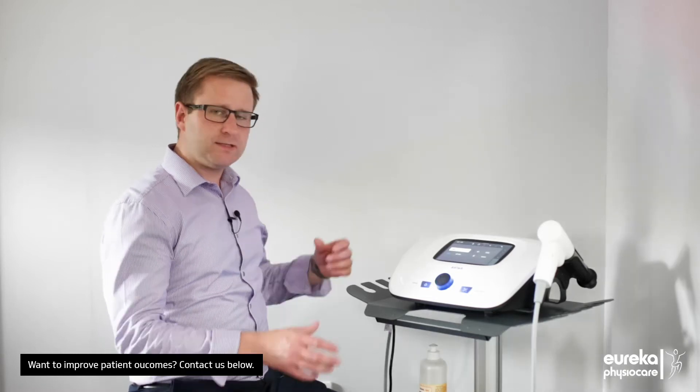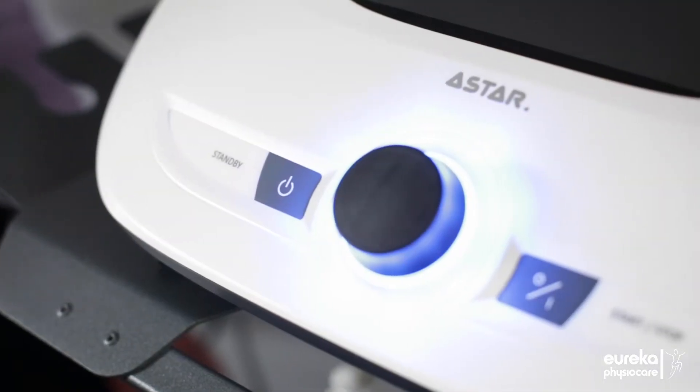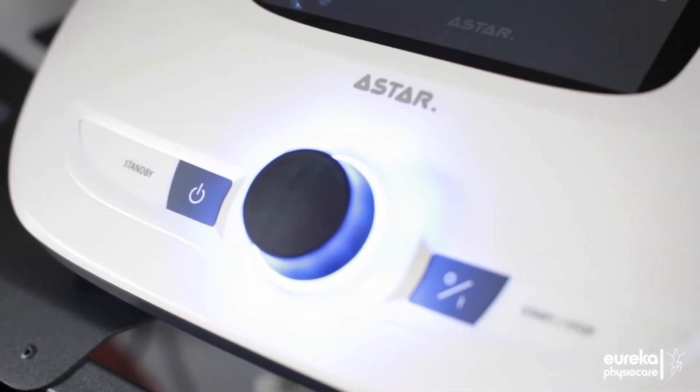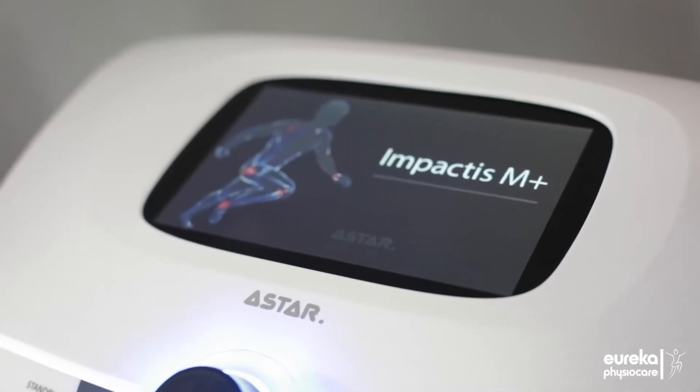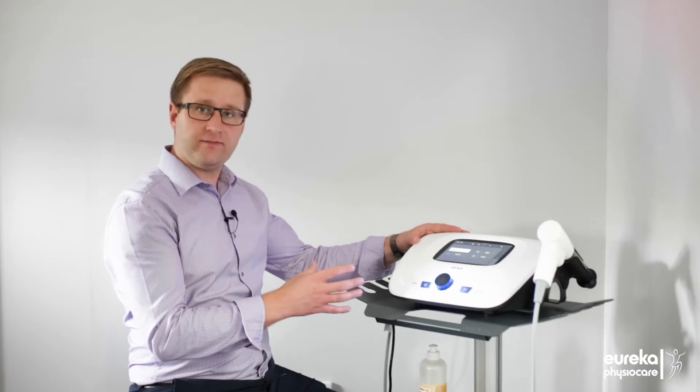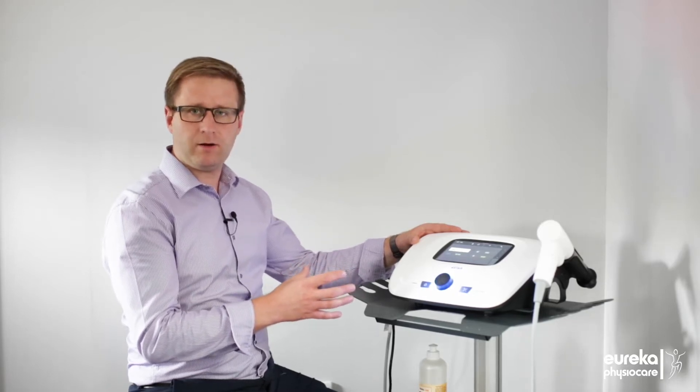This is the Impactus unit we have here, which is a very compact portable unit that means it can be easily transported between clinic rooms and even between clinics. It comes with five bar pressure, so it's a very high output power in a very compact unit.